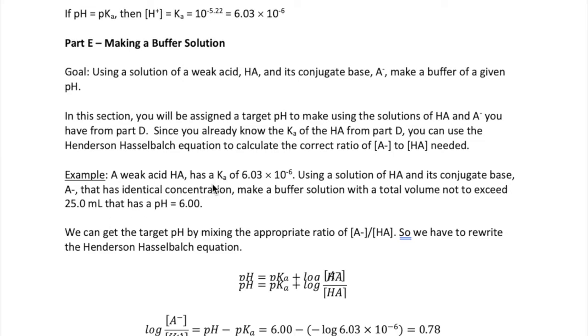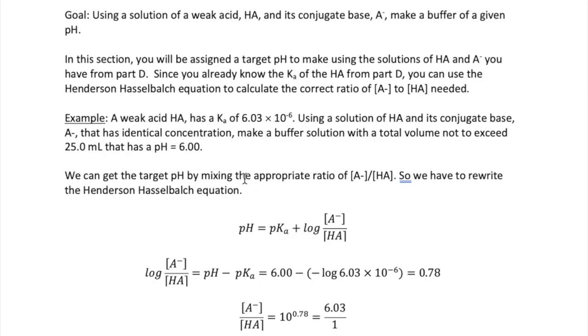Here's an example. You know the Ka of your weak acid is 6.03 times 10 to the minus 6. How do you make 25 milliliters of a buffer that has a pH equal to 6? The idea is that the Henderson-Hasselbalch equation tells us that to get a specific pH of a buffer, the only thing we need to do is mix the appropriate ratio of A minus to HA. So in this case, we rearranged the equation so we're solving for the log of A minus over HA.